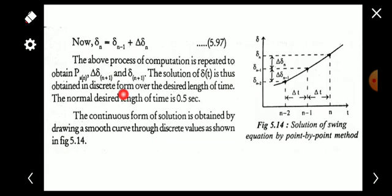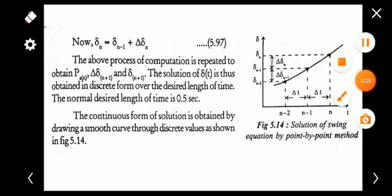The solution of δ(t) is thus obtained in discrete form over the desired length of time — typically 0.5 seconds. The continuous form of the solution is obtained by drawing a smooth curve through the discrete values. This is the point-by-point method for obtaining the solution of the swing equation.